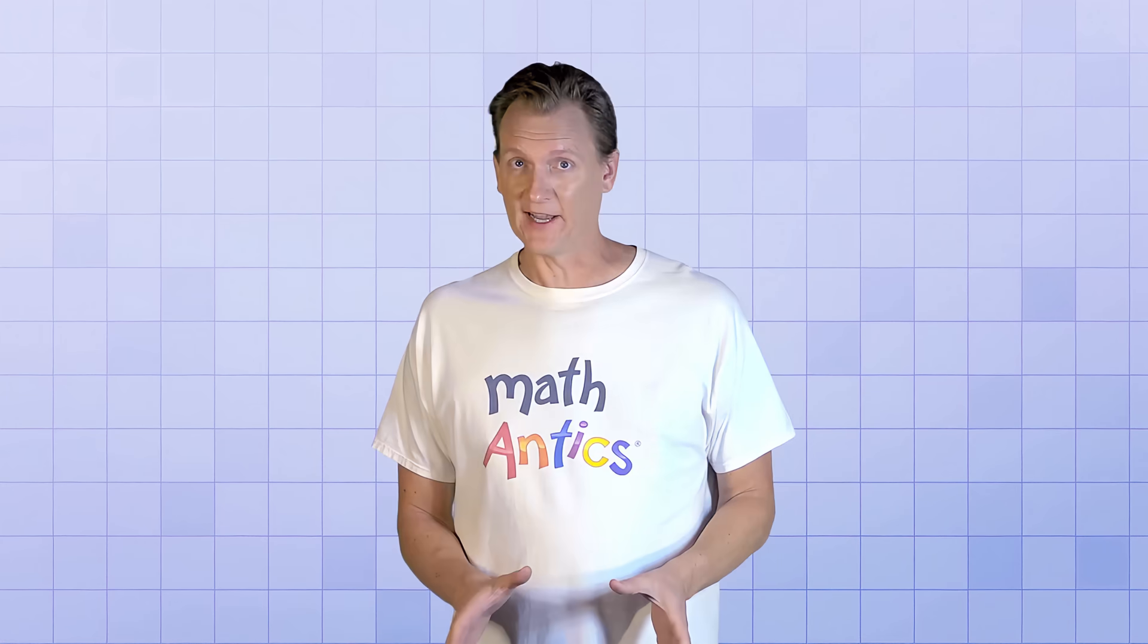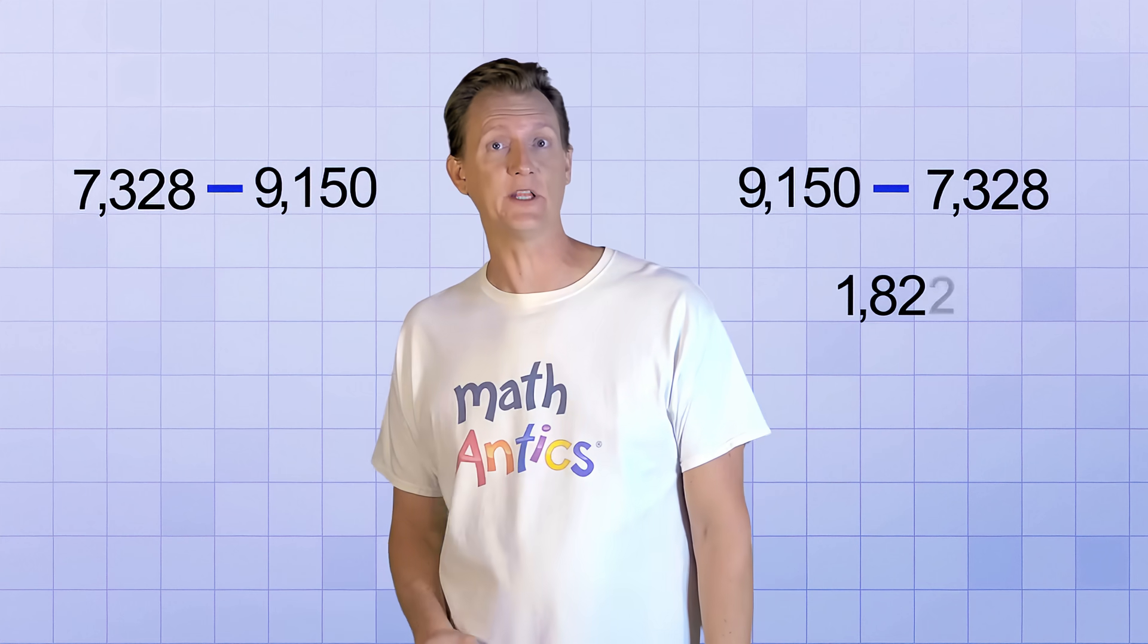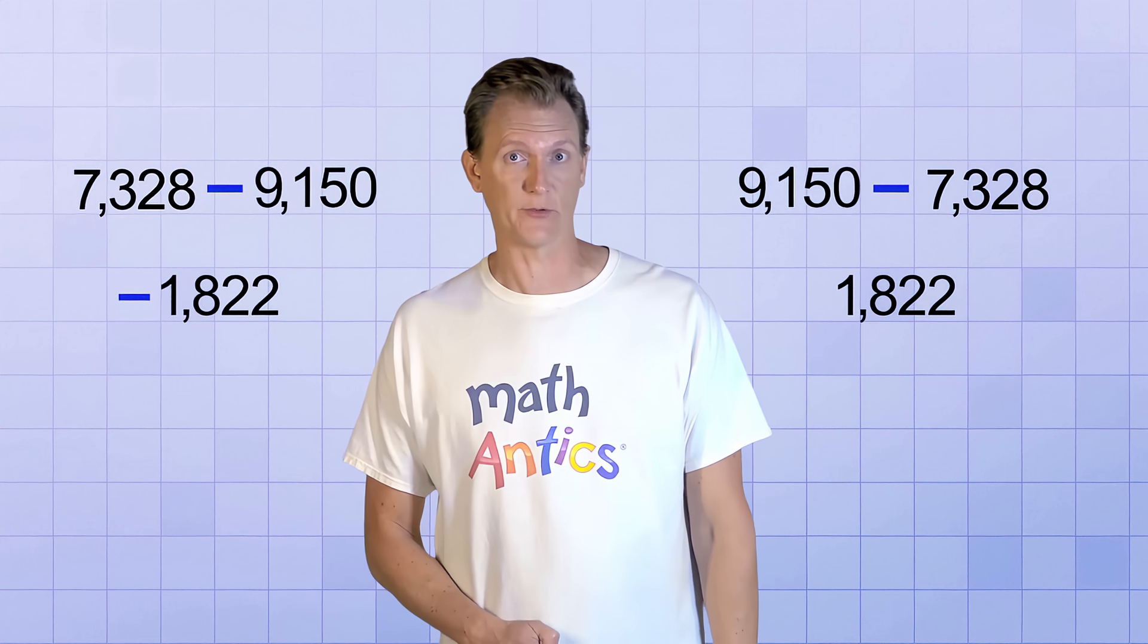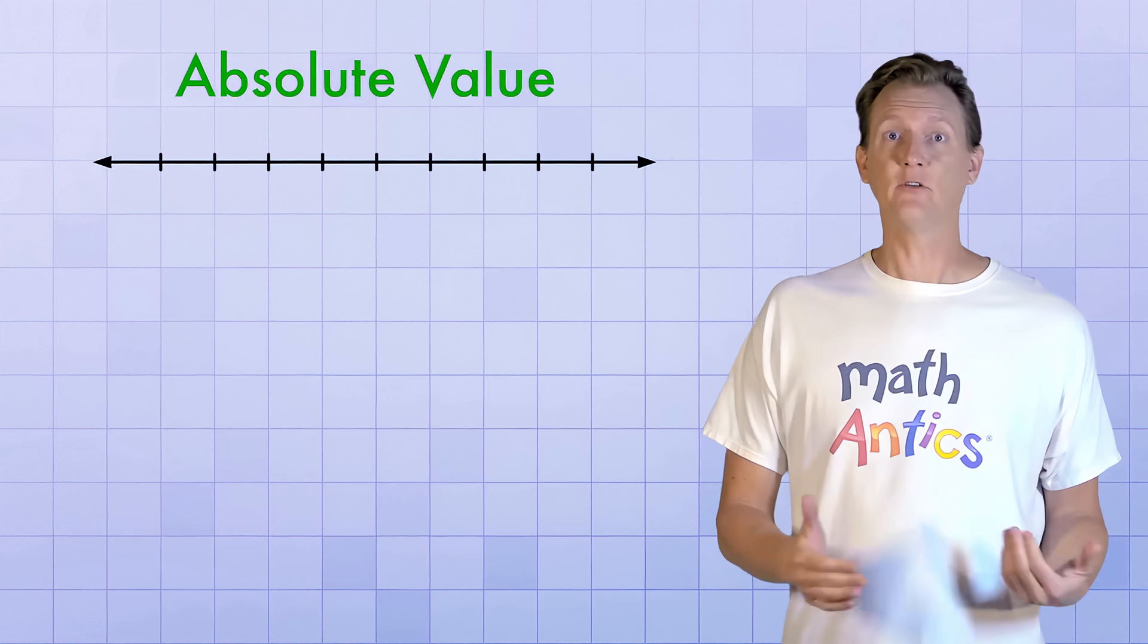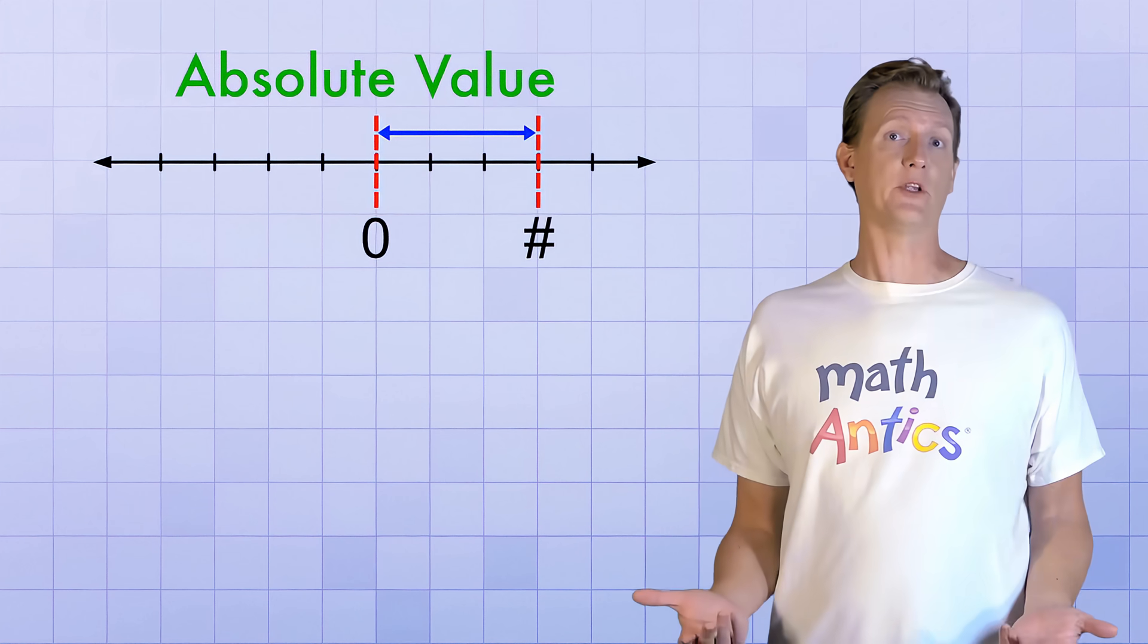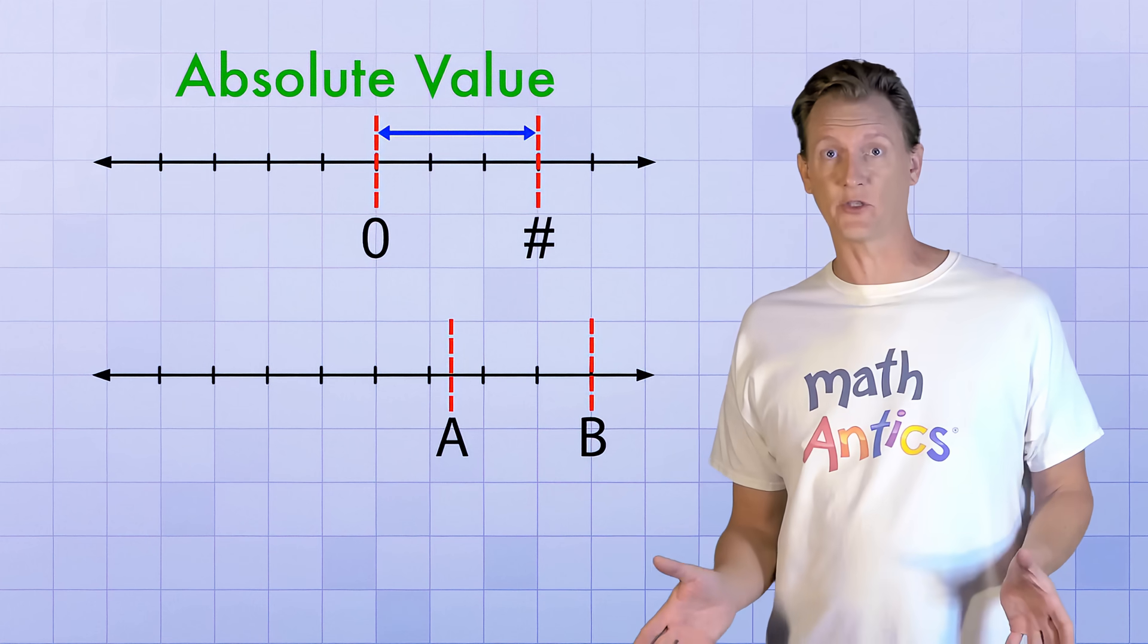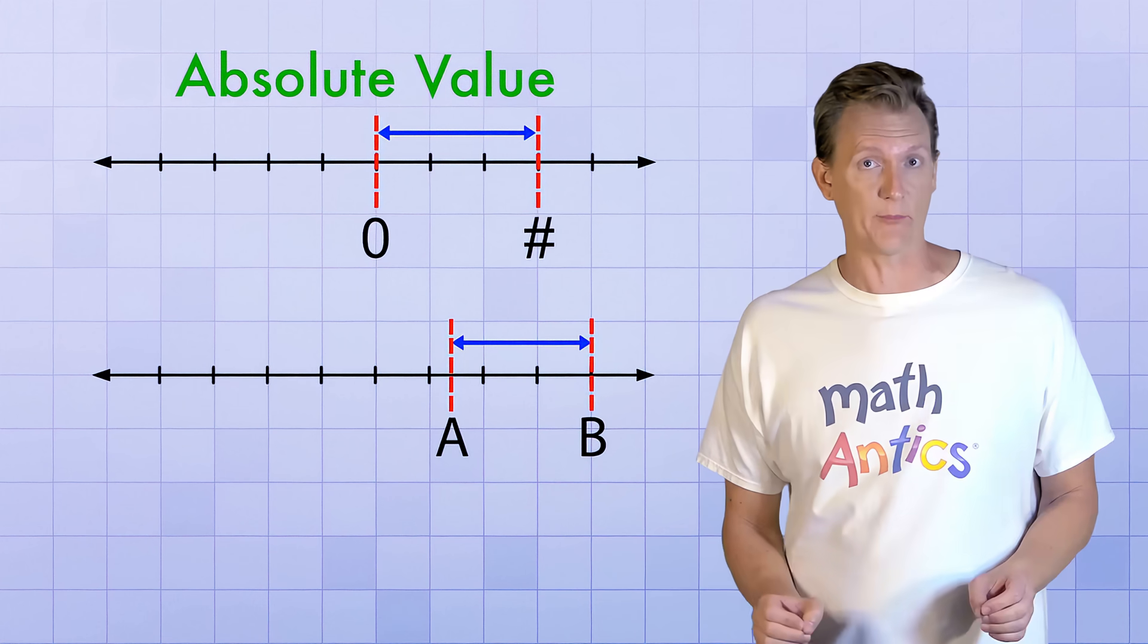If you're not quite convinced of that, try the problem for yourself subtracting both ways and see what answers you get. In one case you'll get 1,822 and in the other you'll get negative 1,822. So now you know that in its most basic form, absolute value is just the distance between a number and zero on the number line. And you've also seen how it can be helpful when you want to find the difference between two different numbers, regardless of which is greater. In that case, the absolute value represents the distance between those two numbers.